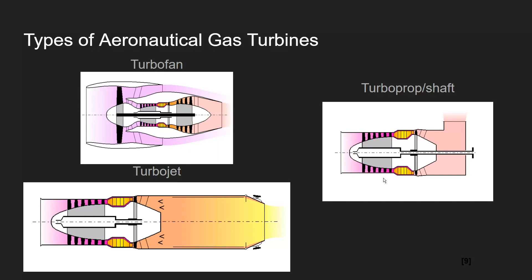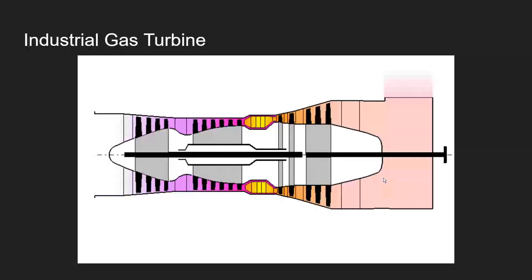Industrial gas turbines, being stationary and ground-based, can be made more complex to increase performance — typically featuring many stages of compressors and turbines — but still follow the same four steps: intake, compression, combustion, and exhaust. Rather than producing a hot exhaust thrust jet, they extract shaft horsepower using a turbine and connect the shaft to an electrical generator, a pump, or some other mechanical process.